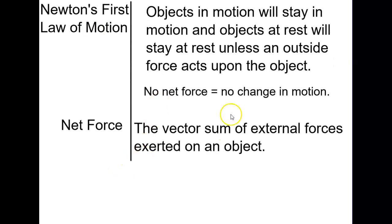So Newton's first law of motion states that objects will stay in motion and objects will stay at rest unless an outside force acts upon an object. So in other words if there is no net force there will be no change in motion. This does mean that an object can go at a constant velocity without having a net force because if the velocity is not changing there's not a change in motion, therefore there is no net force.